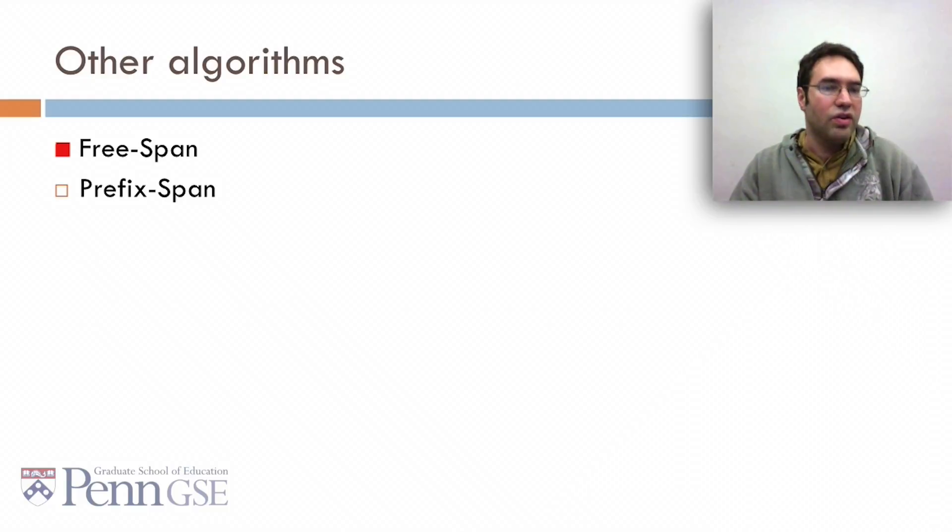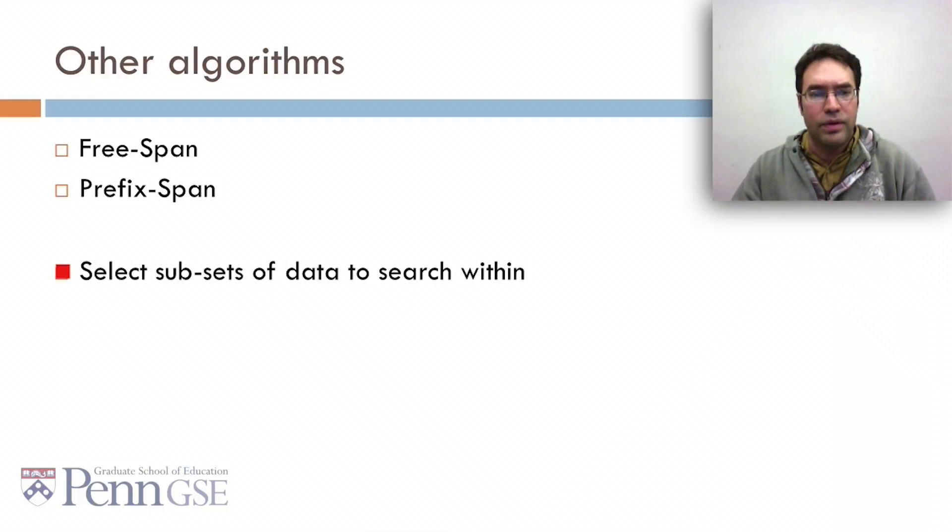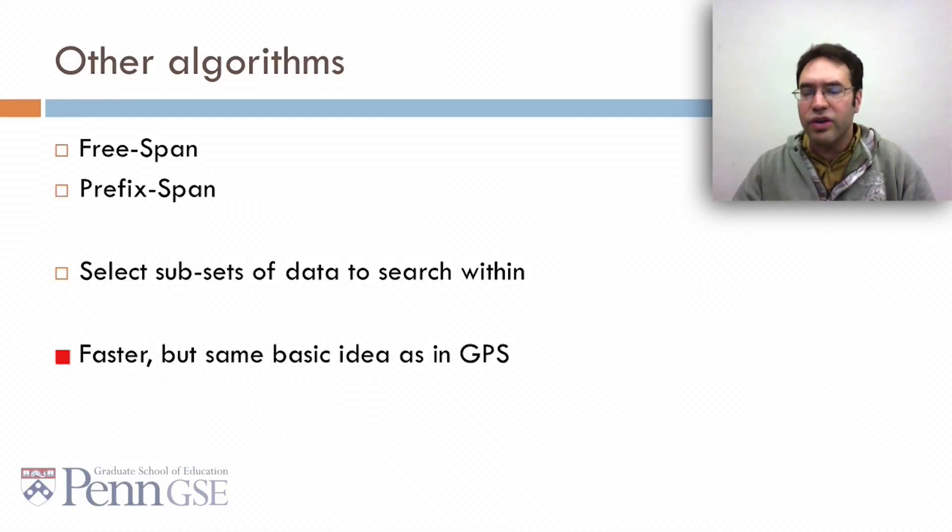Other algorithms that you see include FreeSpan and PrefixSpan, which select subsets of data to search within. They're faster but have the same basic idea as GSP. I won't go into much detail on them right now, but they're worth looking at.